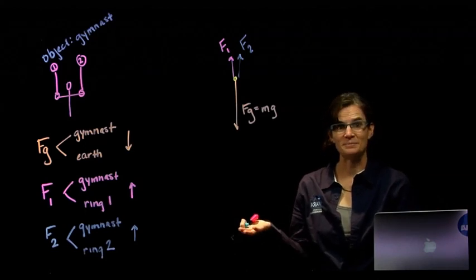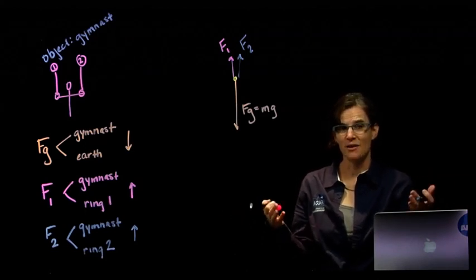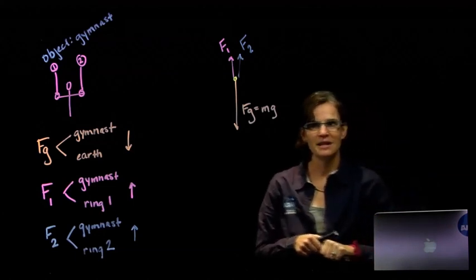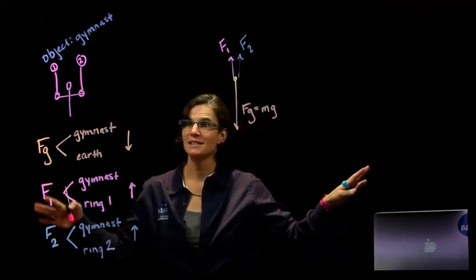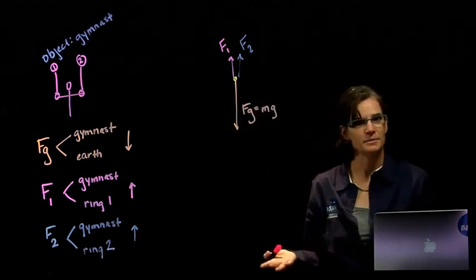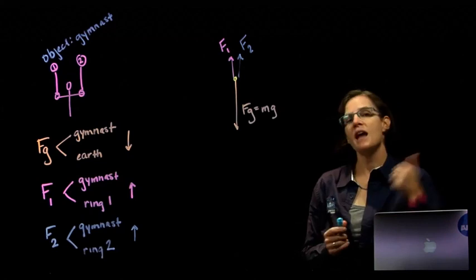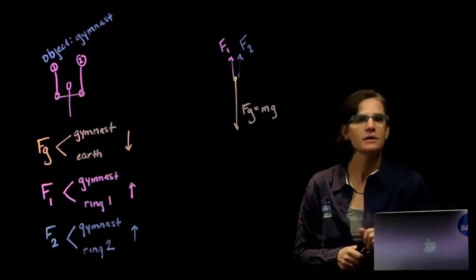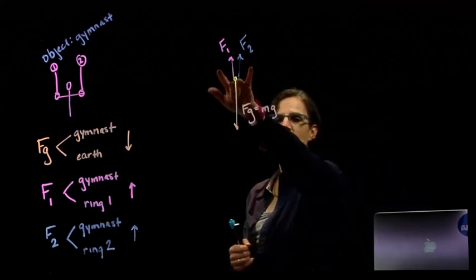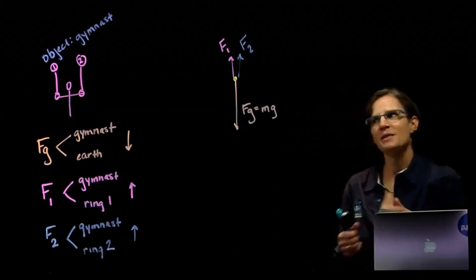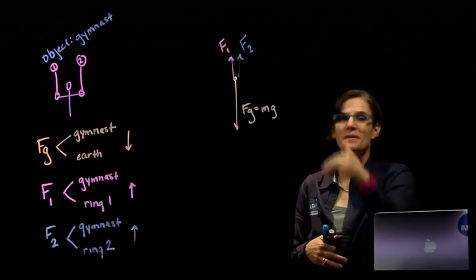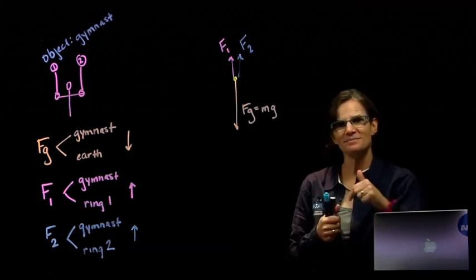So that's our free body diagram. Now, since the gymnast is holding an iron cross and not moving, the net force acting on the gymnast has to be zero. All the upward forces have to equal all the downward forces. With two forces acting up and one force acting down, the two upward forces have to be exactly half of the downward force so that the ups added together equal the down.